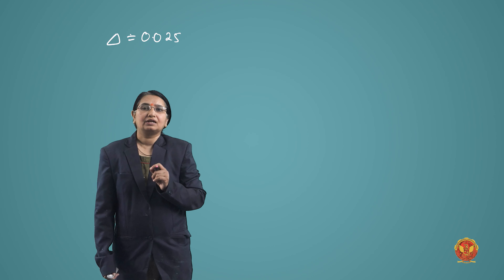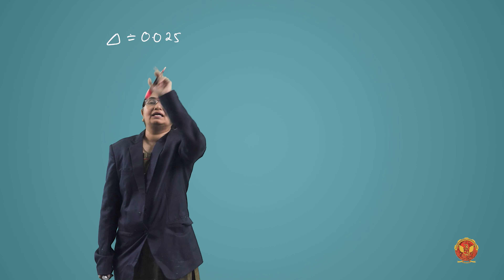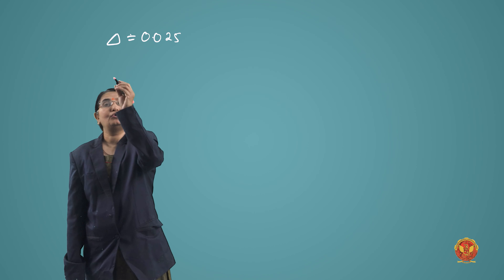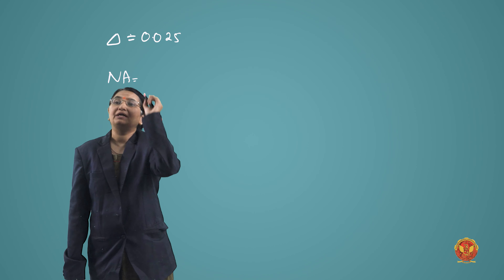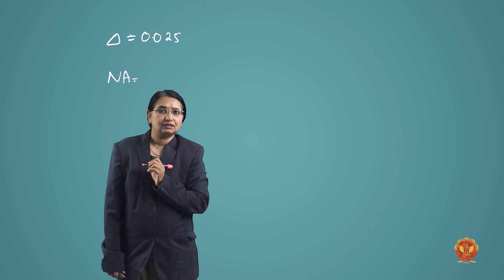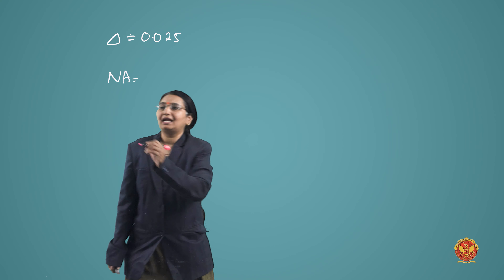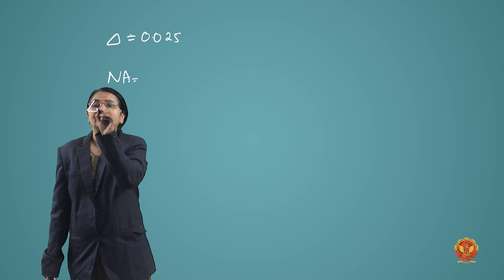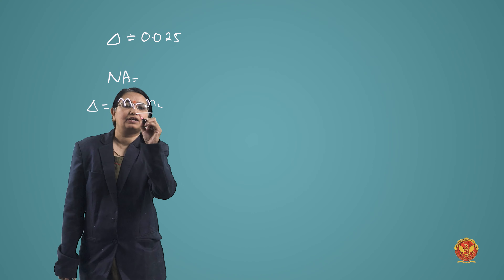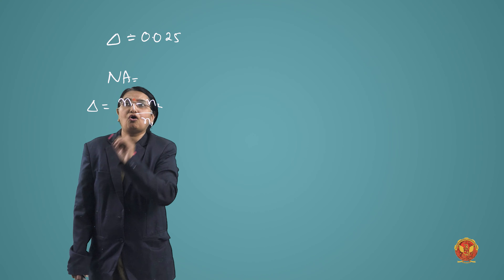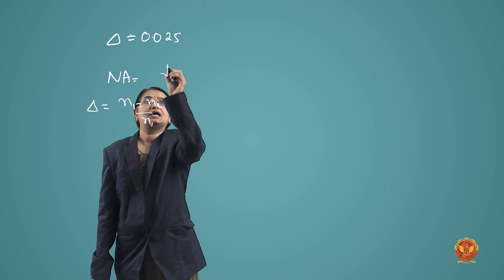What we have given is: we have delta given. For numerical aperture, we have two formulae from the derivation. We recall that delta is defined as (n1 minus n2) divided by n1.